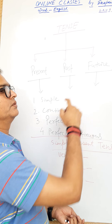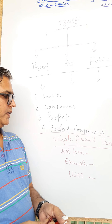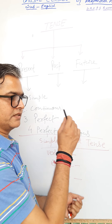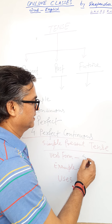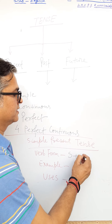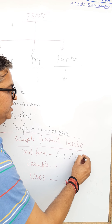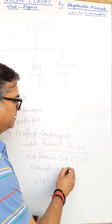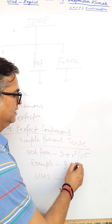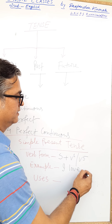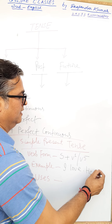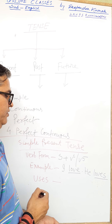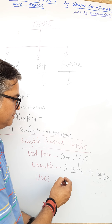Simple present tense: the structure is subject plus V1 or V5. For example, 'I love' — this is V1 — and 'He loves' — this is V5. There are many uses of simple present tense.